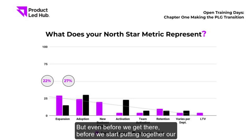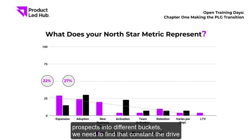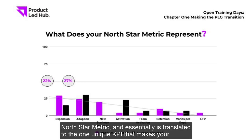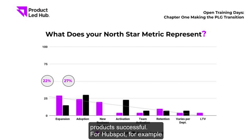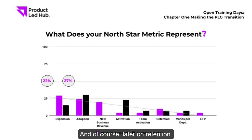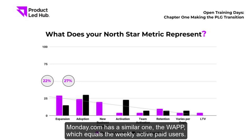Before putting prospects into different buckets, you need to find the constant that drives value for your product — your north star metric. This is essentially the one unique KPI that makes your product successful. For HubSpot, for example, that metric is Weekly Active Teams, because it is a good indicator of adoption and later retention.